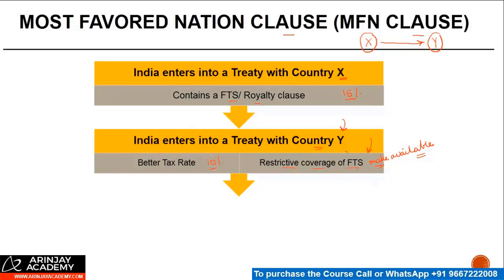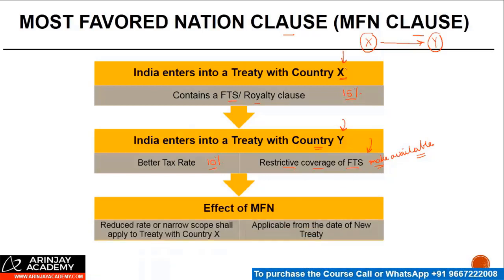In such a case, if the original treaty which India had with country X had a most favored nation clause, then the reduced rate — which is 10% — or the narrow scope, which is the make available clause, shall also apply to the treaty with country X. And it is going to be applicable from the date of the new treaty, which is the date when this treaty comes into force, not from the date when the original treaty was entered into.